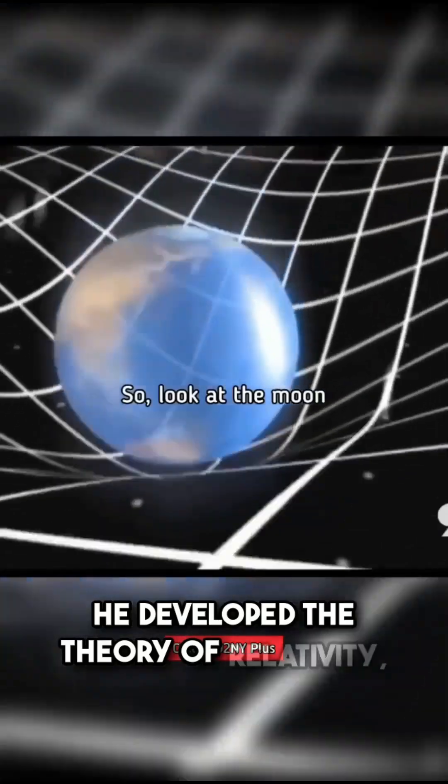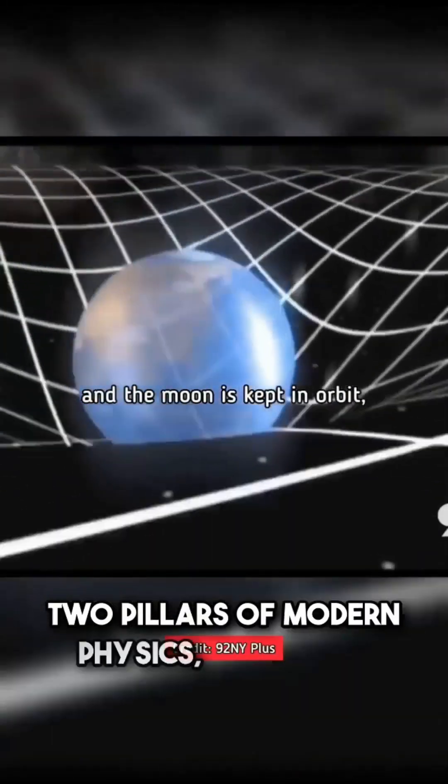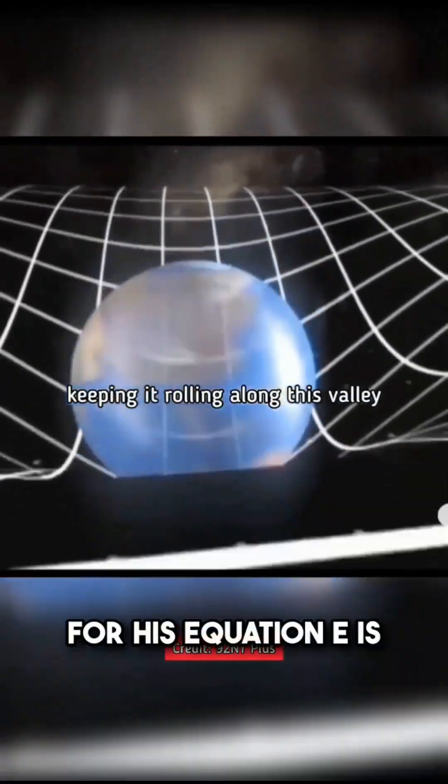He developed the Theory of Relativity, one of the two pillars of modern physics, and is best known for his equation, E equals MC squared.